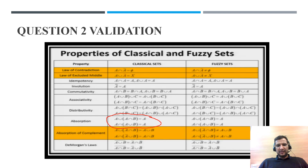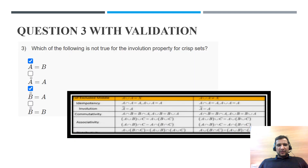This absorption property is not mentioned in the given options, so all of them are incorrect. The correct answer is A union (A intersection B) equals A, but since this is not available in the options, none of them satisfy the above condition.